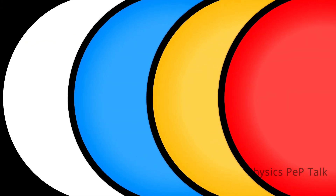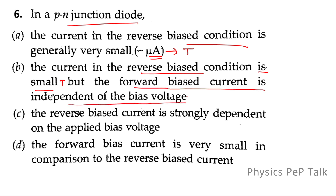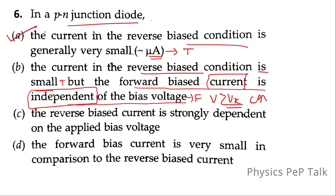Next problem: in a P-N junction diode, the current in the reverse biased condition is generally very small, of the order of micro amperes. This is true. Option B states the current in reverse biased condition is small — the statement is true. But it also says the forward biased current is independent of the bias voltage — this is false, because when we increase the voltage beyond the knee voltage, the current rises, so it is dependent on voltage. Since one part is true and one is false, option A is the correct answer.